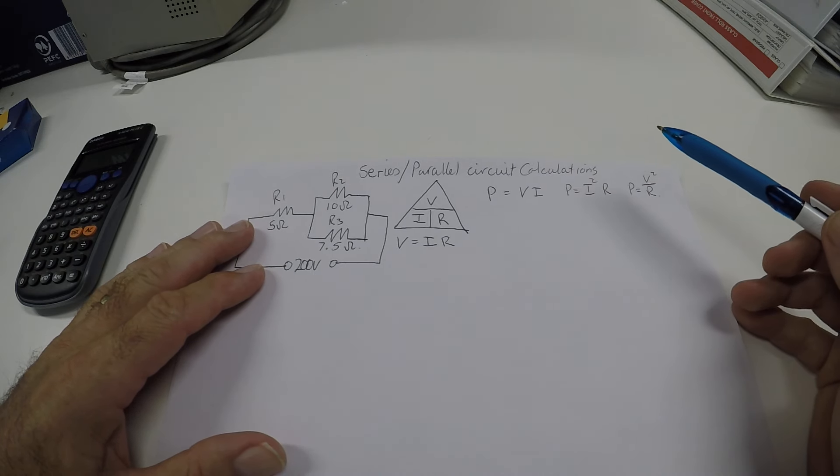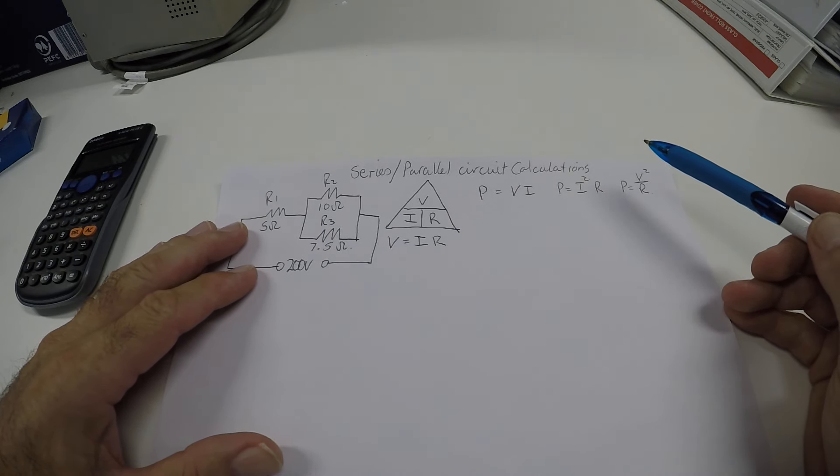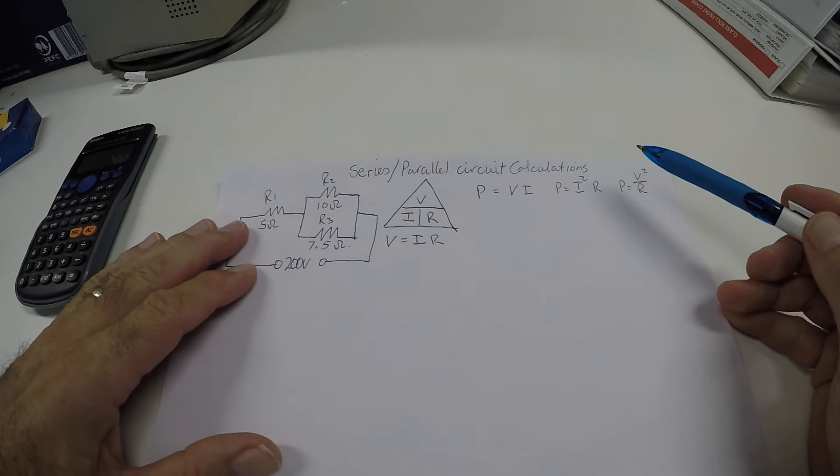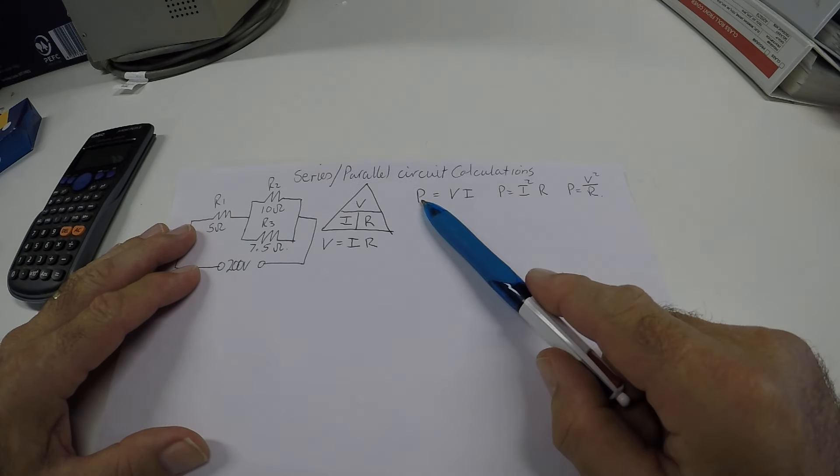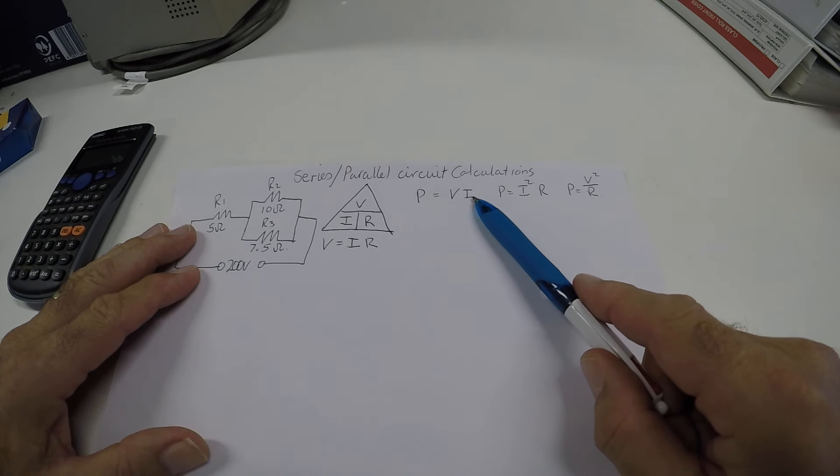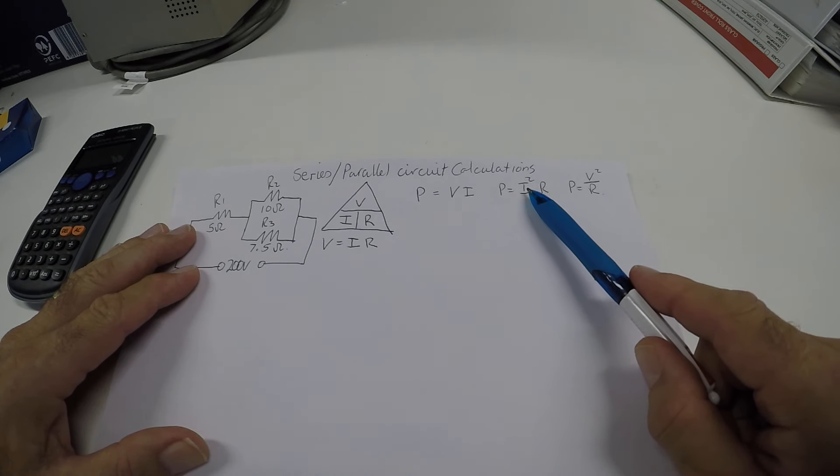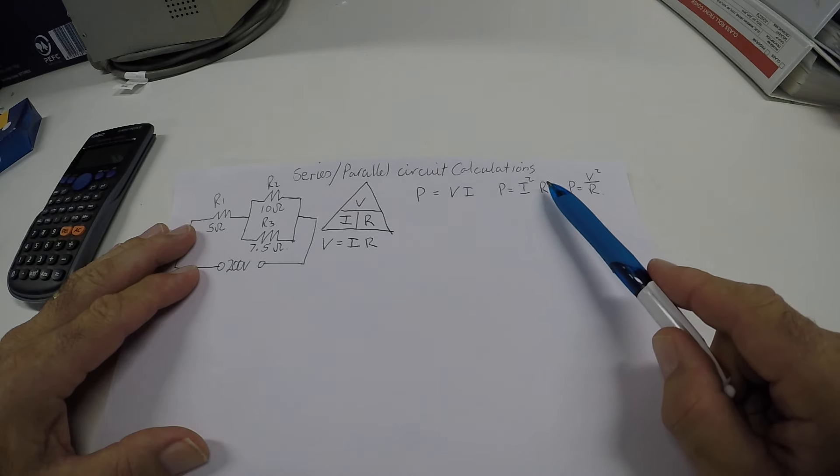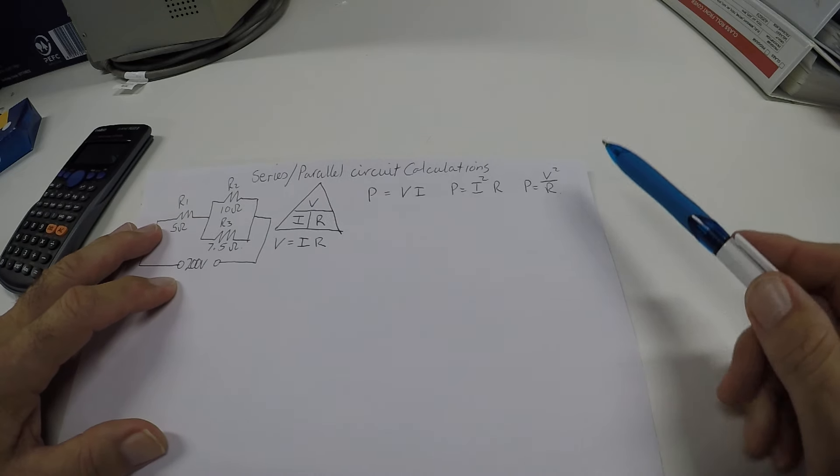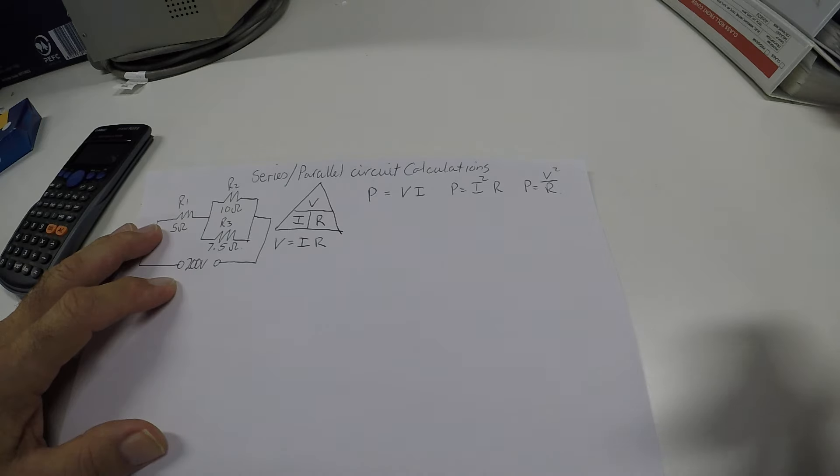And if you're not sure how to do the transposing, have a look for my video where I'll show you how to do transposing. My power formulas, I've got P equals VI, voltage times the current. I've got P equals the current squared times the resistance. And then I've got power is the voltage squared divided by R.